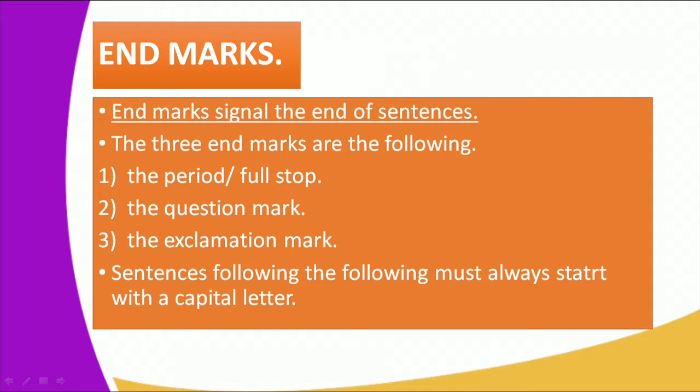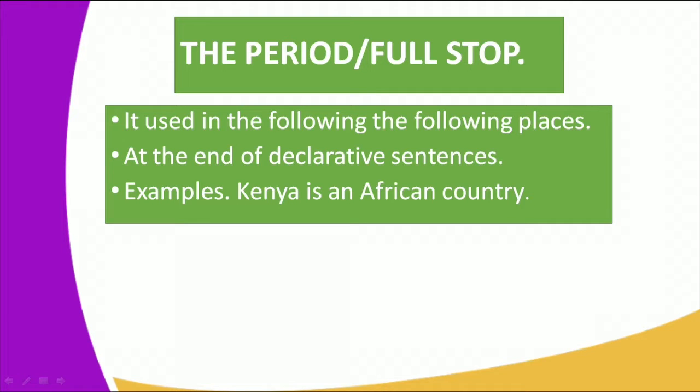Let us start with the end marks. In English, we have three end marks. They are the period, the question mark, and the exclamation mark. Those are the three end marks in English language. To start us off, let's start with the period, otherwise known as the full stop.